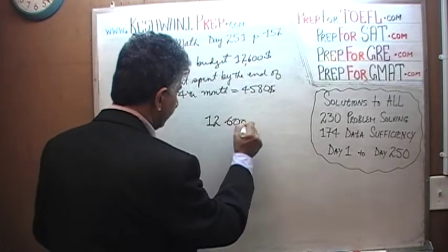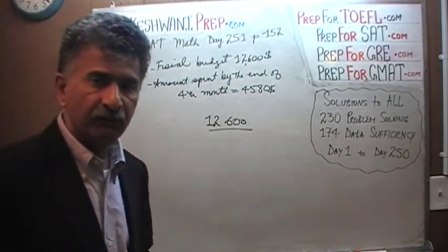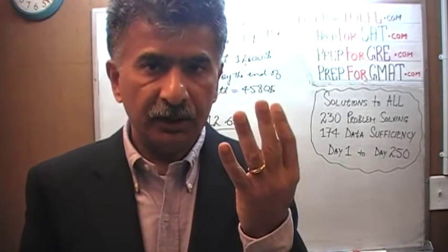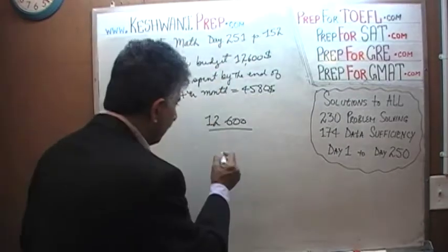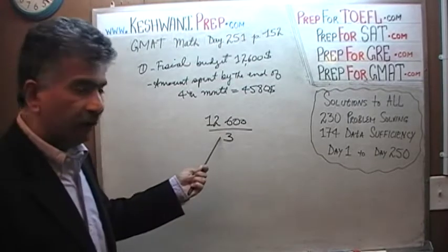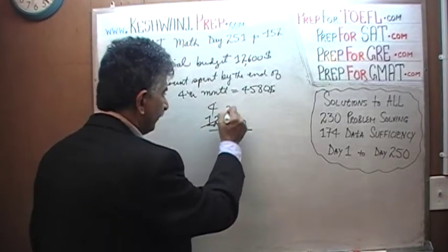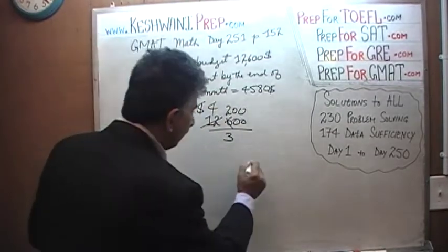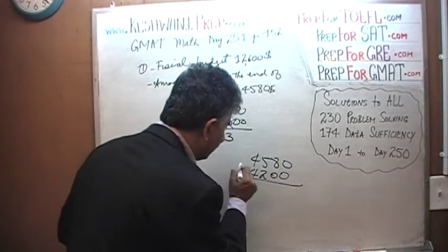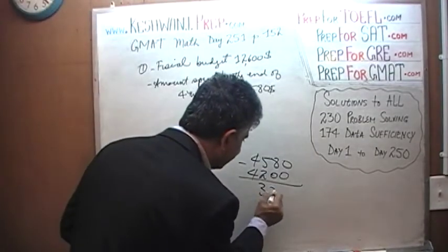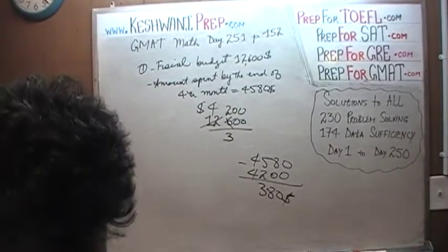We take the $12,600. Don't try to divide by 12 and find the monthly amount — you're going round and round. Ask yourself: how many 4-month periods are there in a year? A year is 12 months, so there are 3 four-month periods. Just divide $12,600 by 3. 12 divided by 3 is 4, and 6 divided by 3 is 2, so we had budgeted $4,200. It turns out we actually spent $4,580. Therefore we are $380 over the budget.